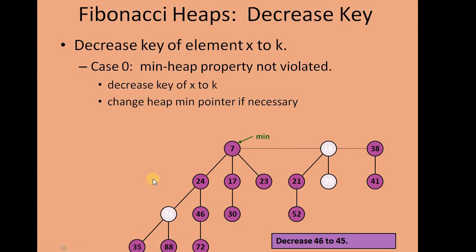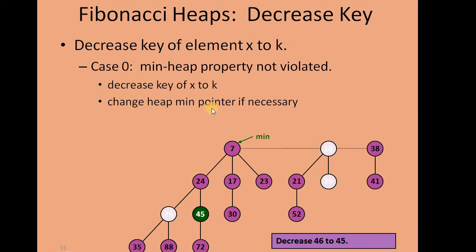Let's see an example. If we have the Fibonacci Heap and we want to decrease a key, say 46 to 45, then on decreasing this key from 46 to 45 there will be no change in the entire heap. We do not even need to change the min heap pointer because it is still in the correct place. This is case 0: no min-heap property is violated, and if required we change the min heap pointer.